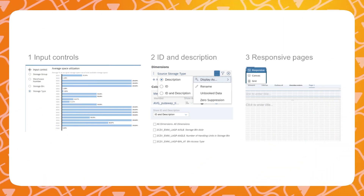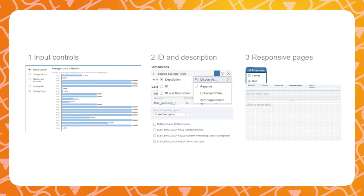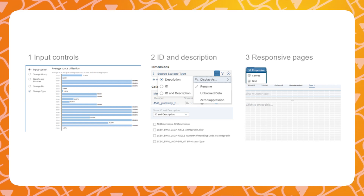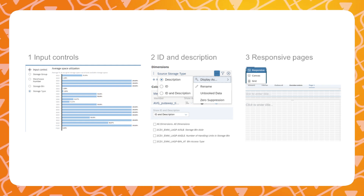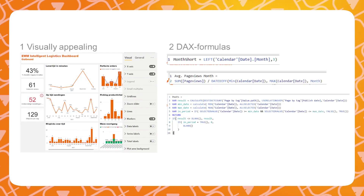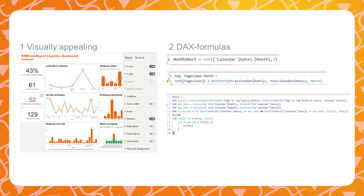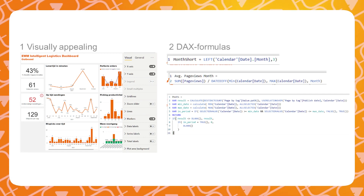In terms of building reports, both tools offer similar features. In SAC, input controls give your users high flexibility to personalize the view of the report. IDs and descriptions are available by default, and responsive pages help to show the report correctly on different screen sizes. Power BI visuals can be styled extensively, which can make your report look amazing. You can use DAX formulas to build measures, tables, and transformations — very similar to formulas in Excel, so it offers a low learning curve for most Excel users. The expression library is very extensive and provides many options to customize your data and formulas.